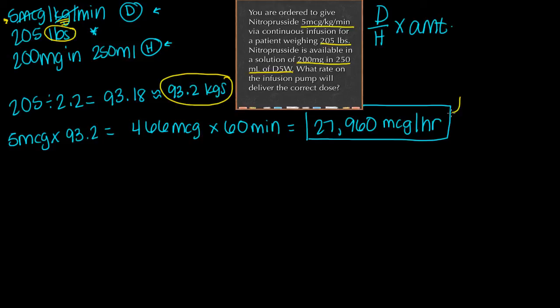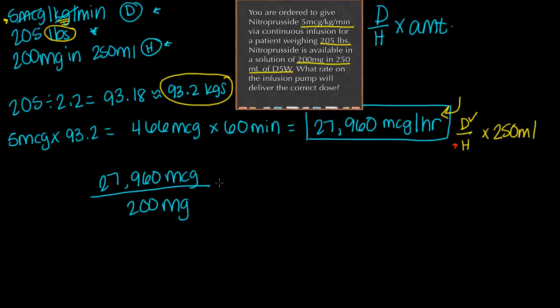Here is my final desired or dose - 27,960 micrograms per hour. This is our D. We still need to figure out the rest of it. We have our top number, we still need to get our have, and we know that our amount is 250 mL. We would do 27,960 micrograms over what we have - 200 milligrams - times our amount, which is 250 mL. But we have a problem: micrograms and milligrams are not the same unit of measurement.